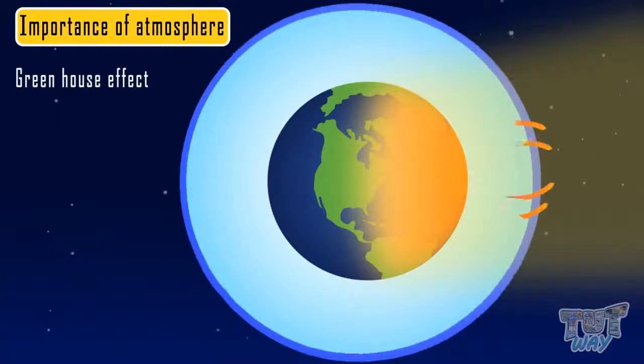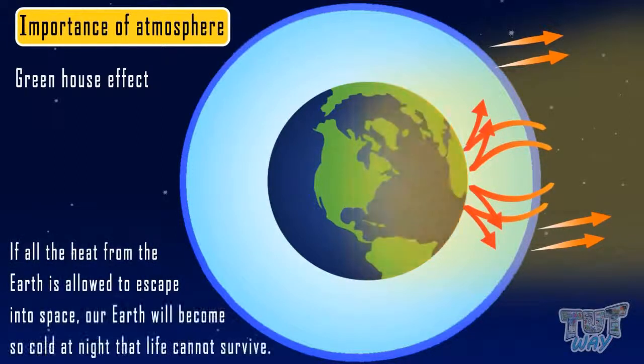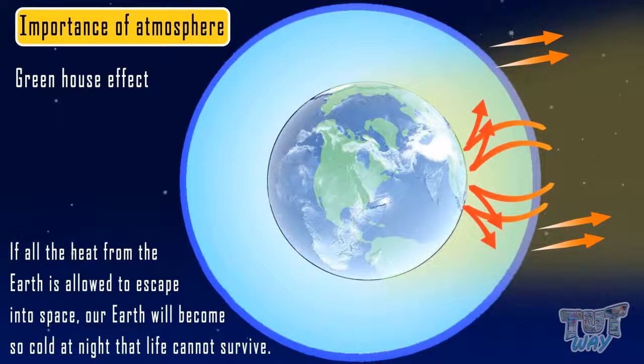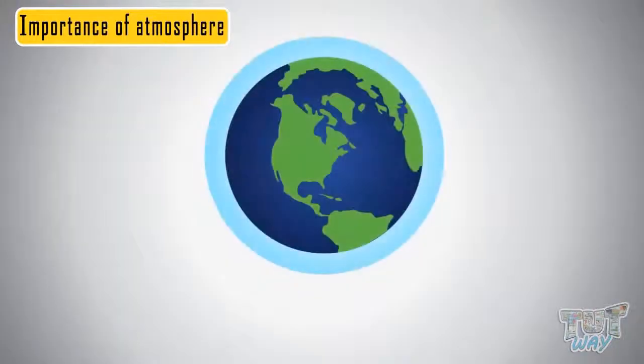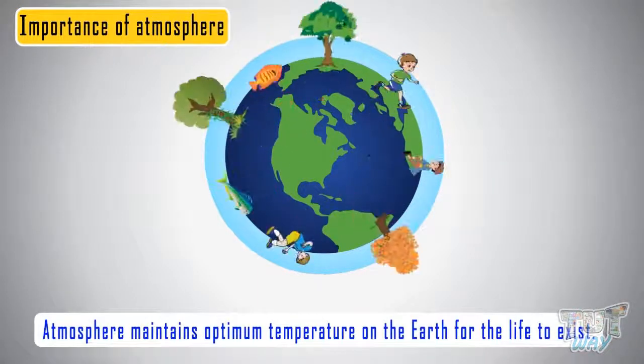If all the heat reflected back by the Earth's surface is allowed to escape into the space, our Earth will become too cold at night that life cannot survive. It is the atmosphere because of which optimum temperatures are maintained on Earth for life to exist.